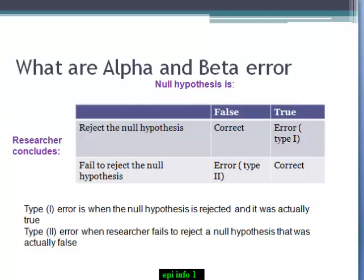You have four options. Either to reject the null hypothesis, which was actually false, or failed to reject the null hypothesis that was actually true. These are two correct options.